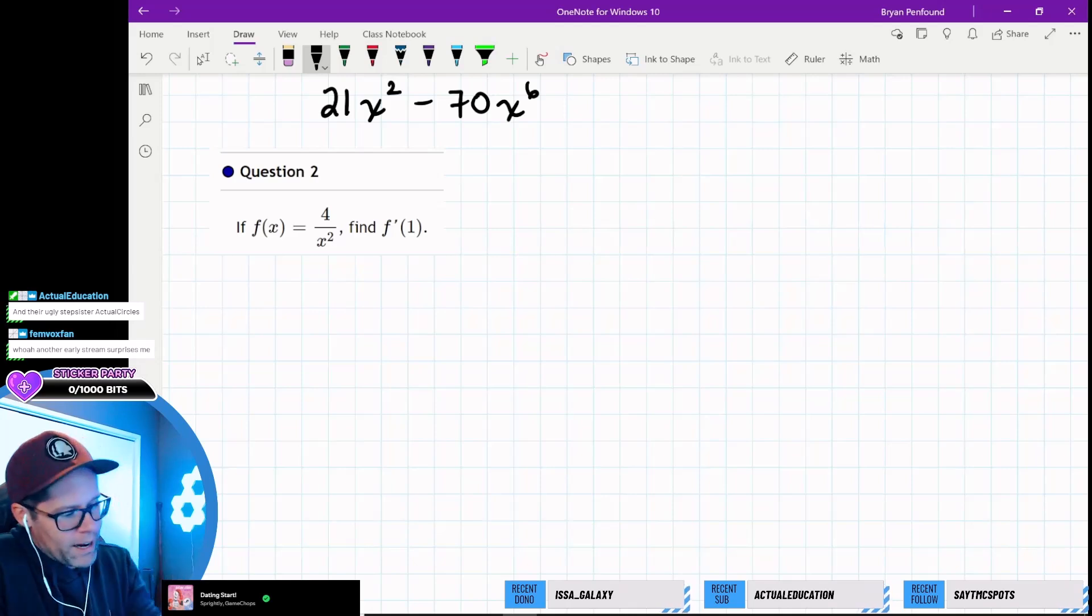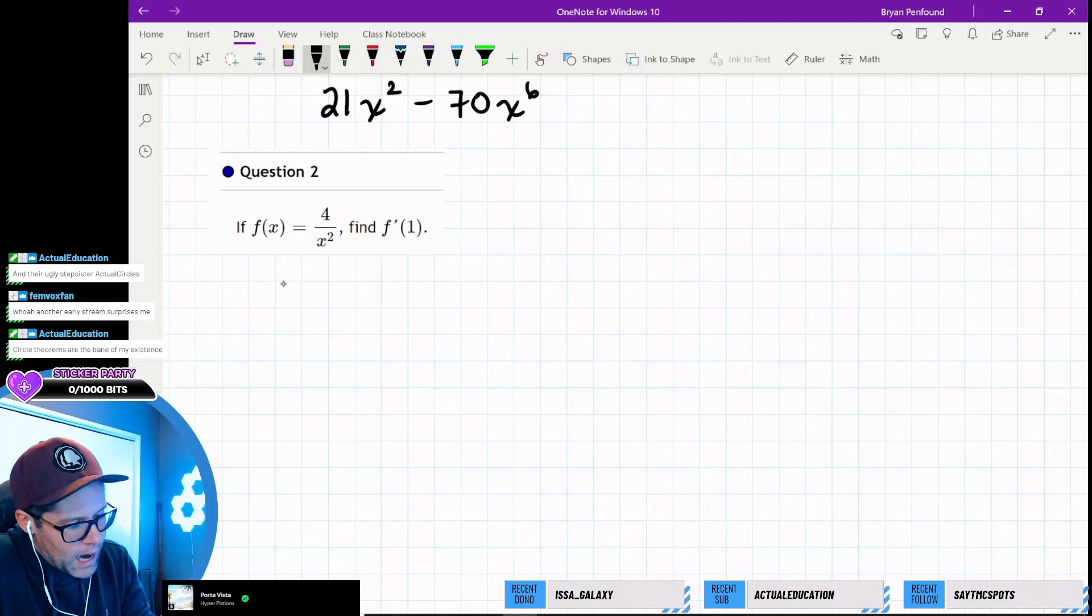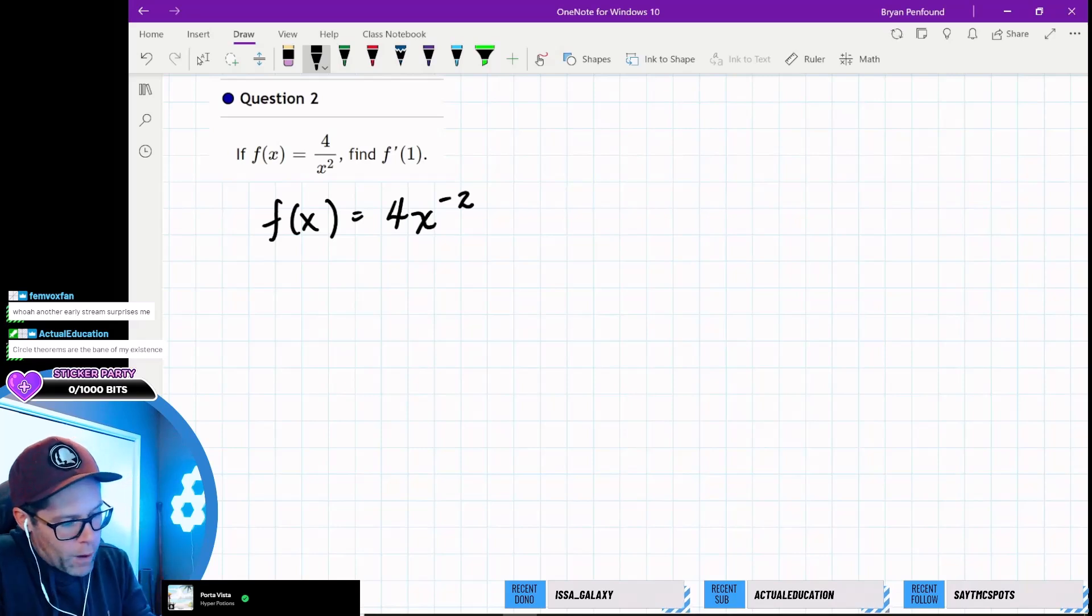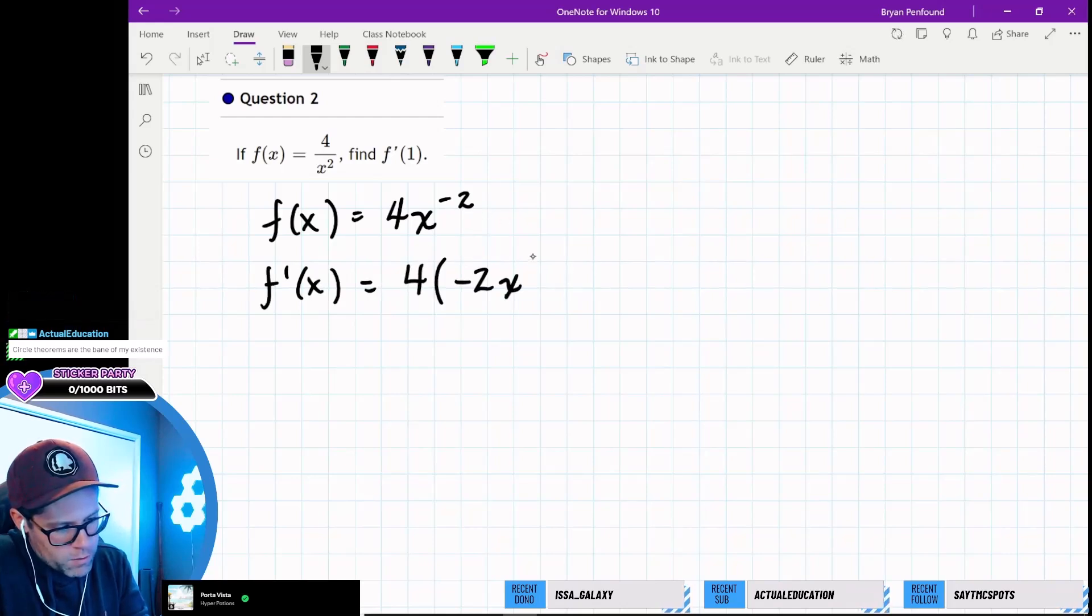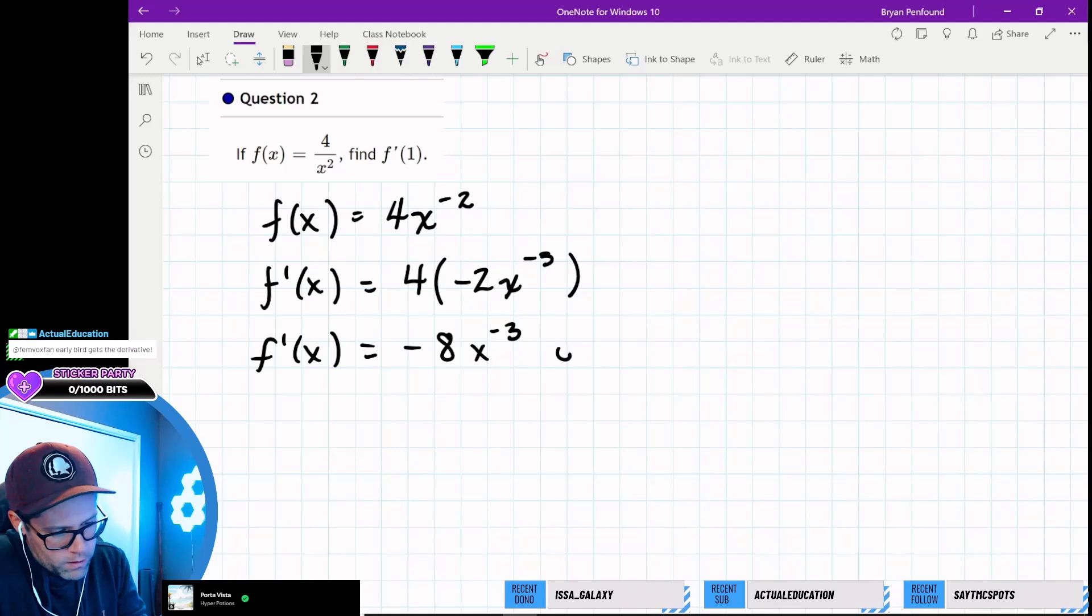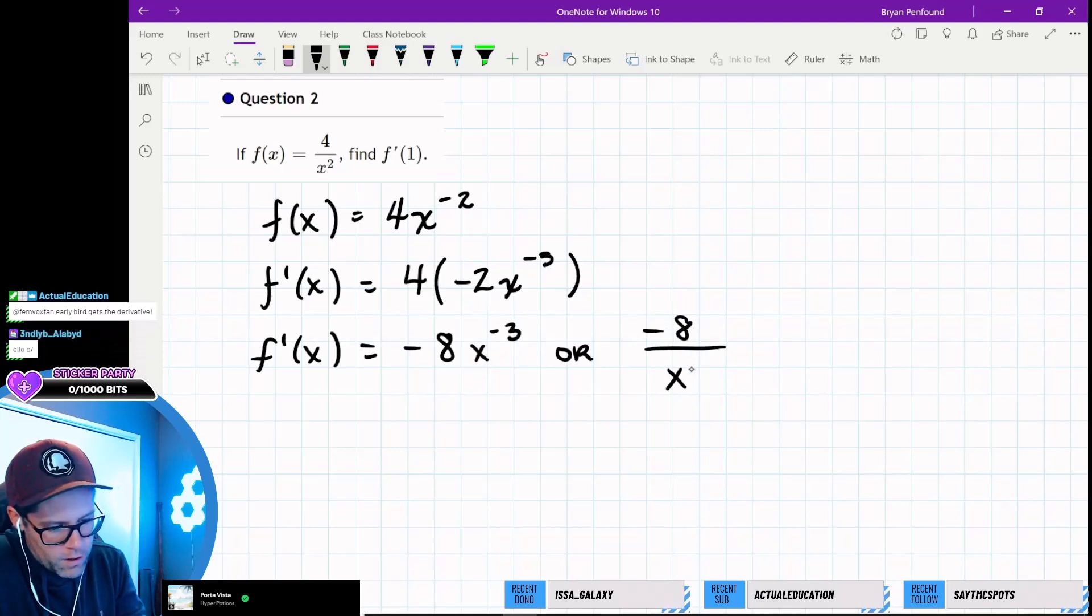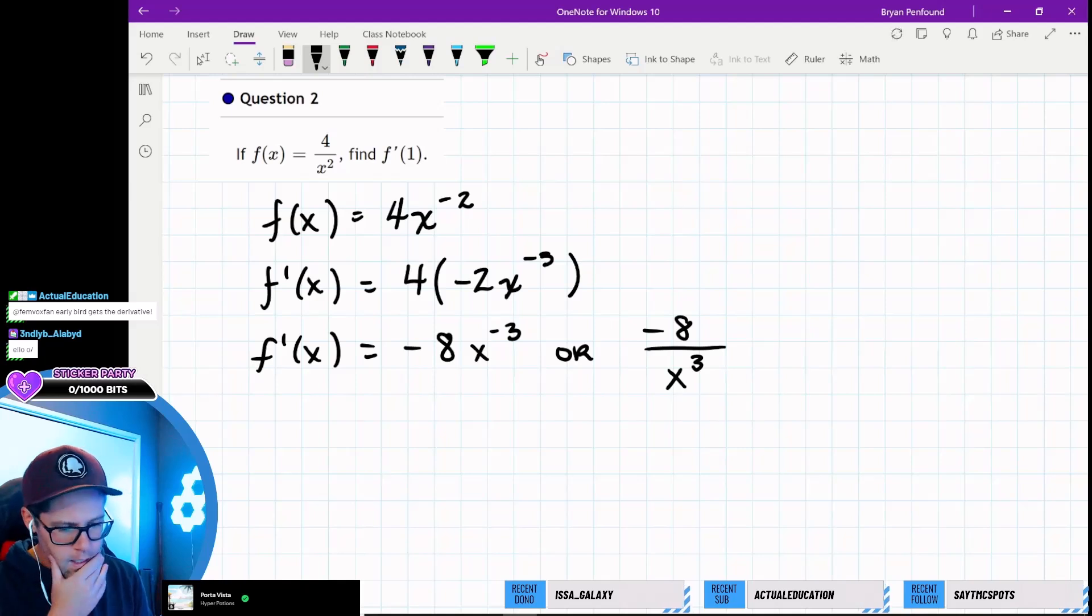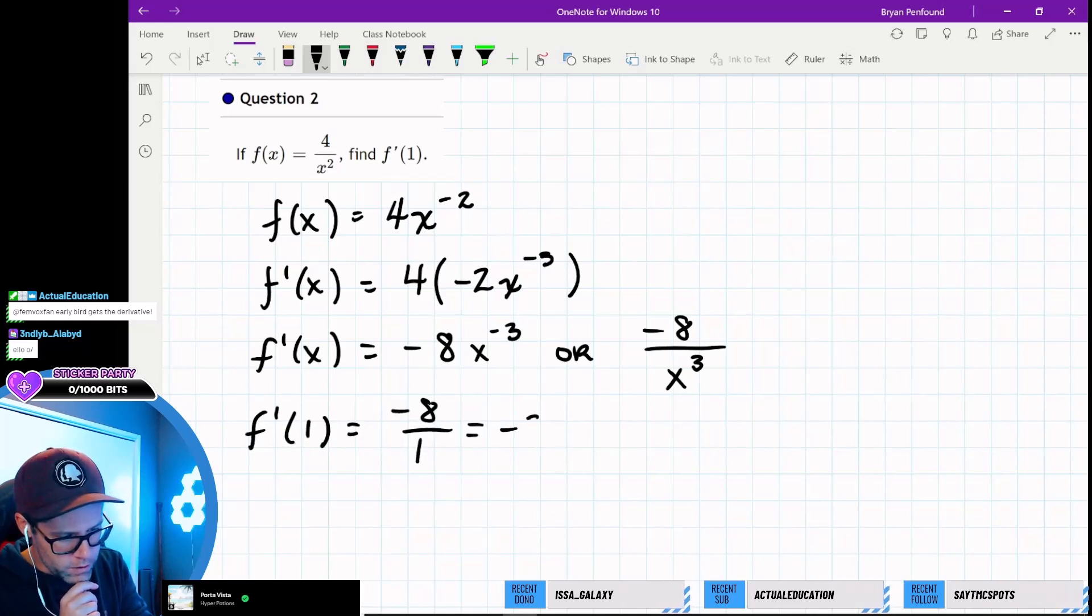Question 2. If f of x is 4 over x squared, we want to find f prime evaluated at 1. I would suggest in this particular case, it's helpful to rewrite this as 4 times x to the minus 2. And then we can apply the power rule. So when we go to take the derivative of f, we can keep this 4 the same, and then we'll bring down our minus 2, and then we'll subtract 1 from the power. And that gives us a derivative of negative 8x to the negative 3. Or if we wanted to, we could write this as negative 8 over x to the 3. Now we want to evaluate this at 1. So let's go ahead and substitute 1 into our fraction. We'll get negative 8 over 1, which is equal to negative 8.